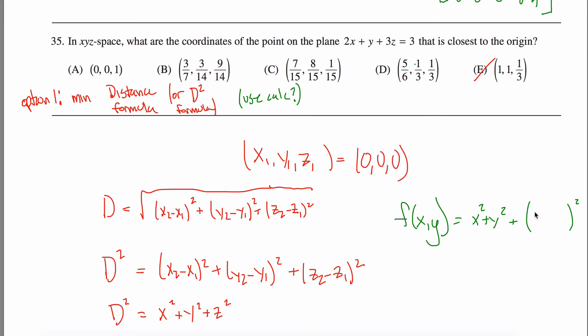Let's see, z would be three minus two x minus y over three. So here's x squared plus y squared plus z squared. And I want to minimize this thing where I can take partials, partial x, partial y. You could minimize this, but it'll be a lot of work.